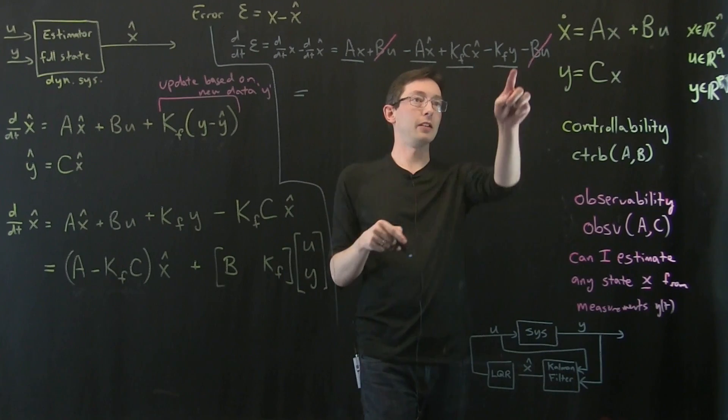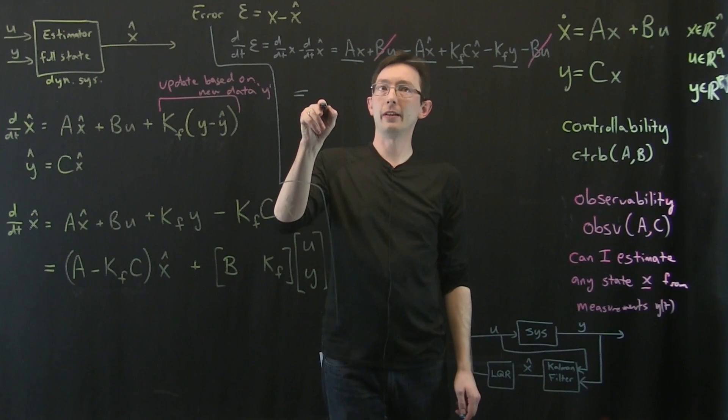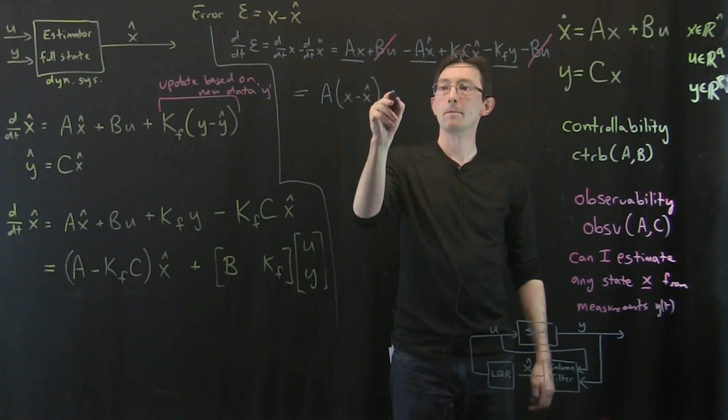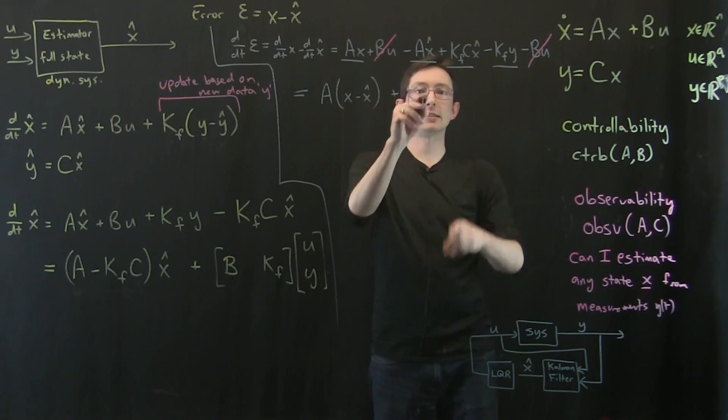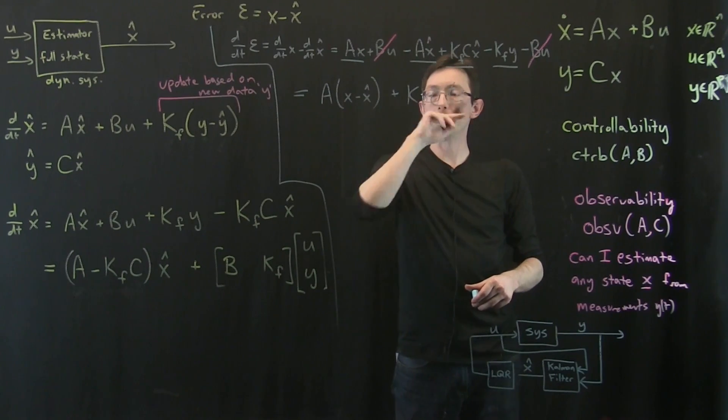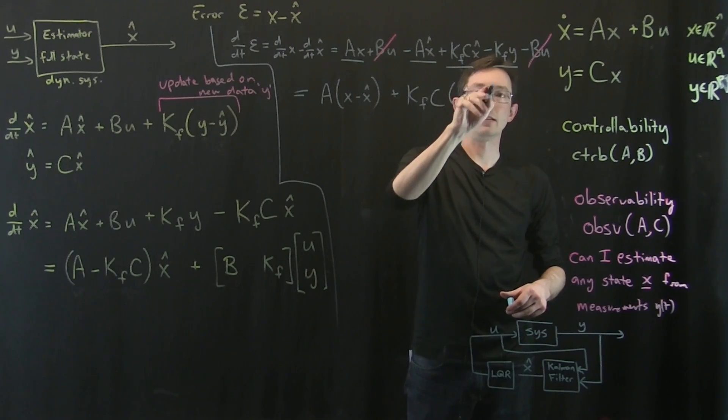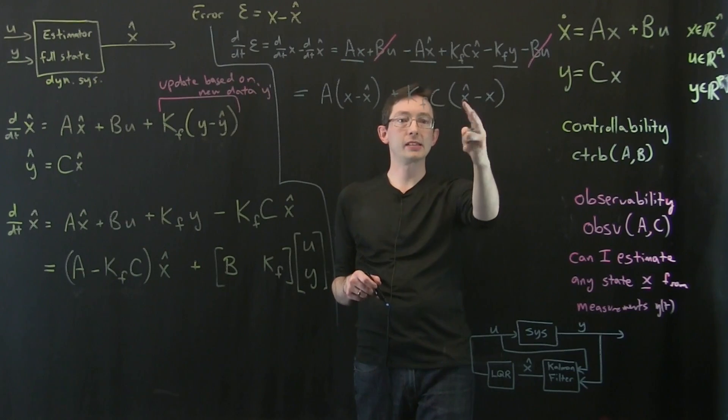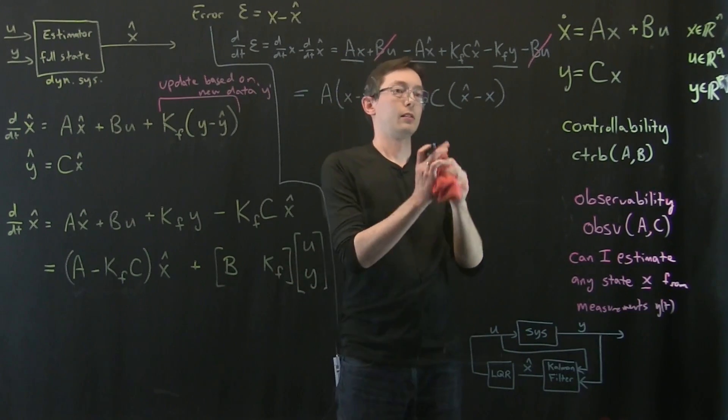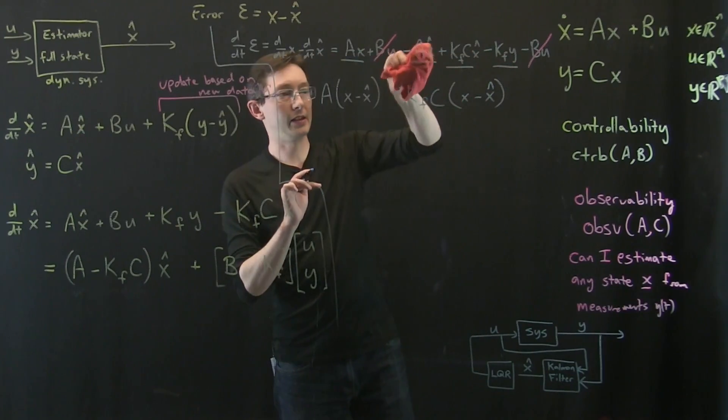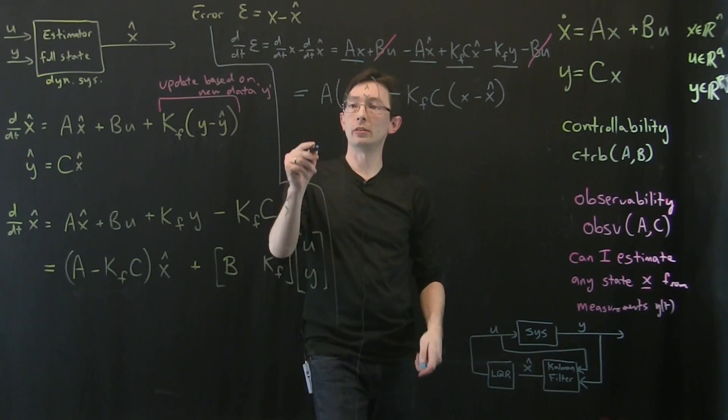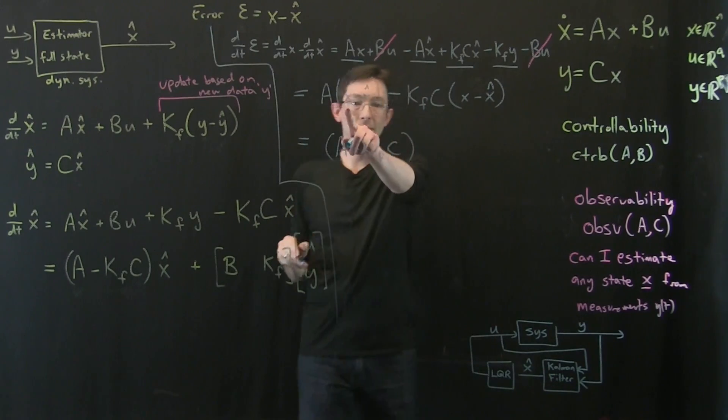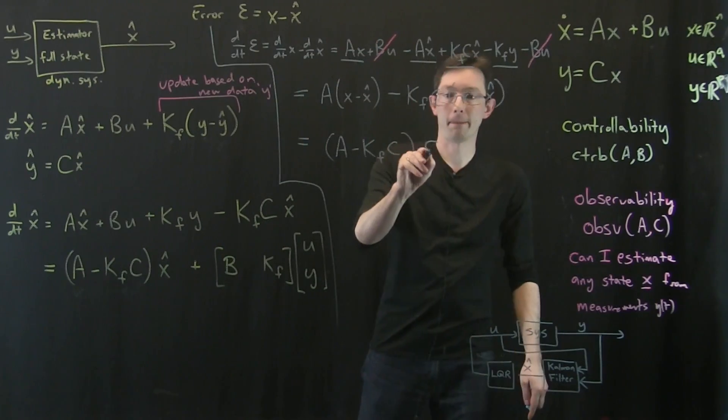So we have four terms left for epsilon dot, my error dot. Let's now say that Y equals C times X. So now I have A times X minus X hat, plus KFY equals CX. So I have C times X hat minus X hat minus X. I'm just taking these four terms. I plugged in CX here, and this is what I get. So now let's flip the sign of this and make this X minus X hat and put our negative sign here. And now, lo and behold, what we have is DDT of epsilon equals A minus KFC times X minus X hat. What's X minus X hat? It's epsilon.